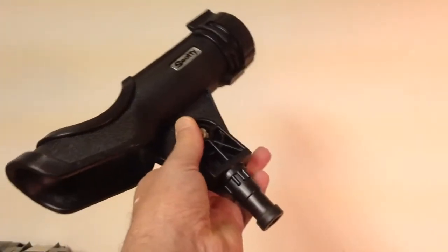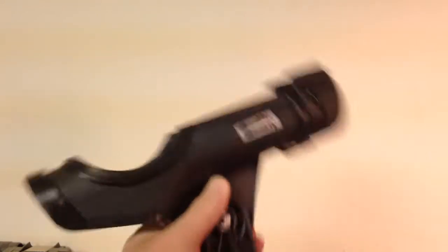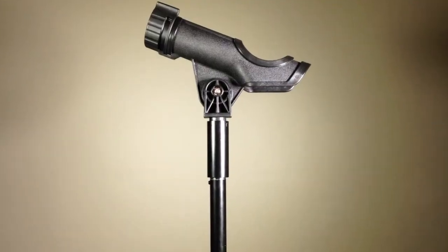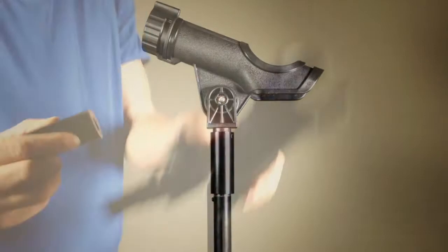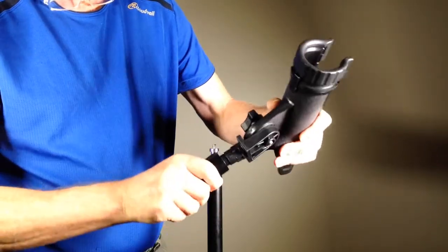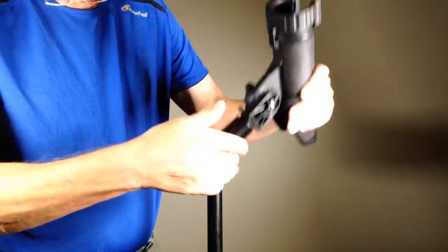My custom-made adapter uses a Scotty PowerLock fishing rod holder that cost around $18. With the pole end of the problem now solved, I still needed a way to securely attach it to the stud on the end of a standard light stand.